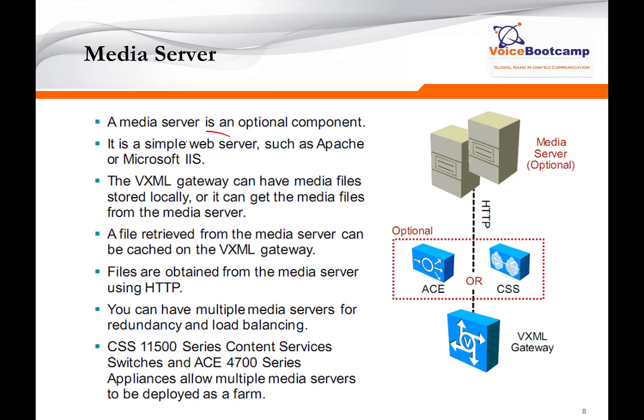The media server is basically a simple web server running either Apache software or Microsoft IIS. The VXML gateway, which is a Cisco IOS router, will communicate with the media server to pull all the media files required by the script. For example, if the script says it needs to play a welcome message — welcome.wav — the IOS gateway will contact the media server, because CVP will tell the IOS gateway which server to communicate with. It will download the media file, and once downloaded, it will keep a cache if configured, so subsequent requests for that file do not require another call to the media server.